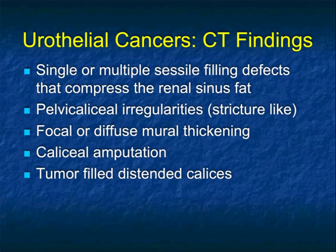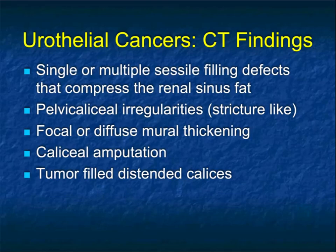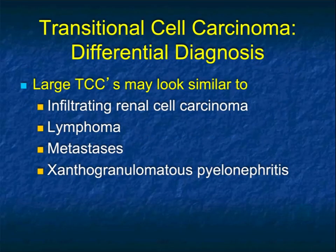When you think about urothelial carcinomas, there's a range of appearances from very small polypoid lesions to subtle pelvic caliceal irregularities, which are often stricture-like, to focal or diffuse mural thickening, to abrupt caliceal amputation, to tumor-filled distended calices. The earlier you pick things up the more subtle it is, and the subtle lesions are really where you want to make the diagnosis — that's what improves patient care.